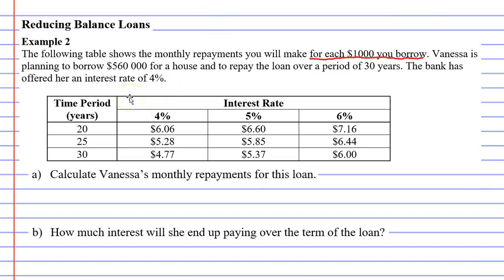Vanessa is planning to borrow $560,000 for a house and to repay the loan over a period of 30 years. The bank has offered her an interest rate of 4%. Notice that these two numbers — 30 years and 4% — match up to an amount of $4.77, which is the repayment.